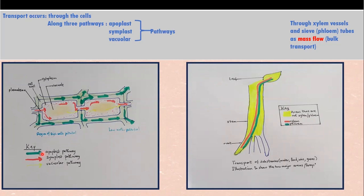Briefly, the apoplast pathway is the interconnection of all cell walls in the plant — all the cell walls in the epidermis, cortex, pith, and medullary rays are interconnected. These cell wall interconnections have a lot of free spaces through which water and dissolved substances move. That is the apoplast pathway. Then in the symplast pathway, substances move from one cytoplasm through the plasmodesmata into the cytoplasm of the next cell.